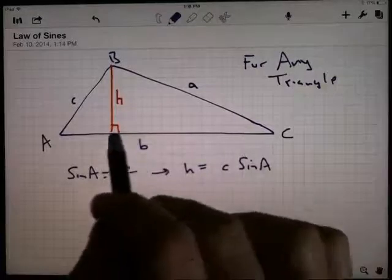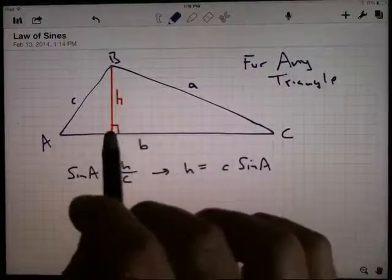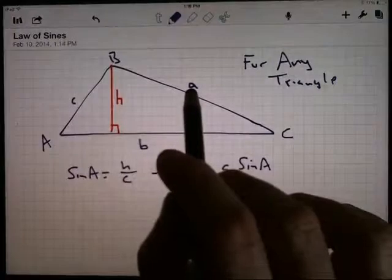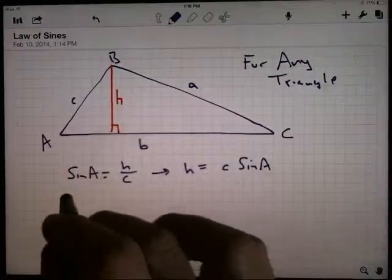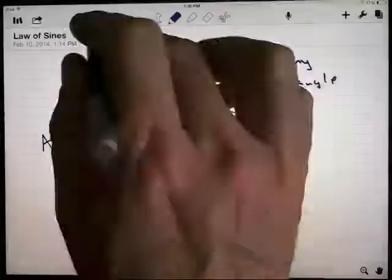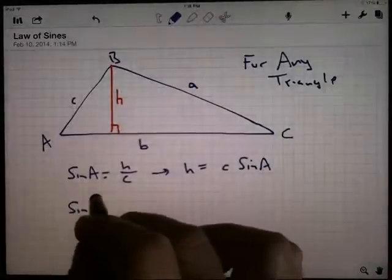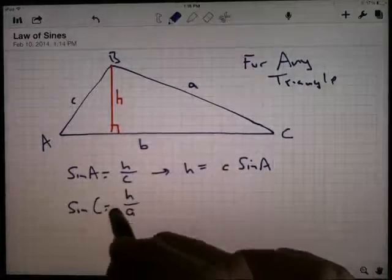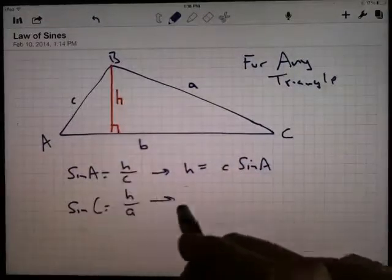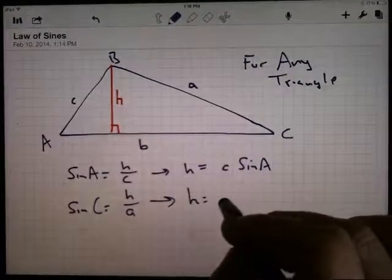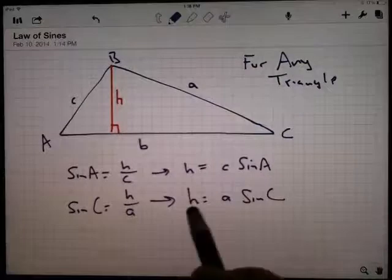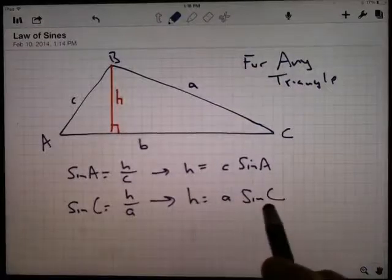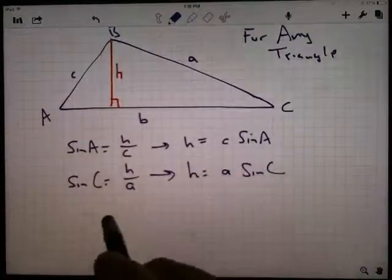All right, let's keep going here. Look at the other half of the triangle. I've got a right triangle. I've got a hypotenuse of little a and an opposite side. This angle C, the opposite side is h there. So now I know that the sine of angle C is h divided by little a. It's the same h it was before. Let's solve for it again. I've got h is equal to a times the sine of C. Well, if h is equal to that and h is equal to this, then that and this must be the same thing. So let's set them equal to each other.